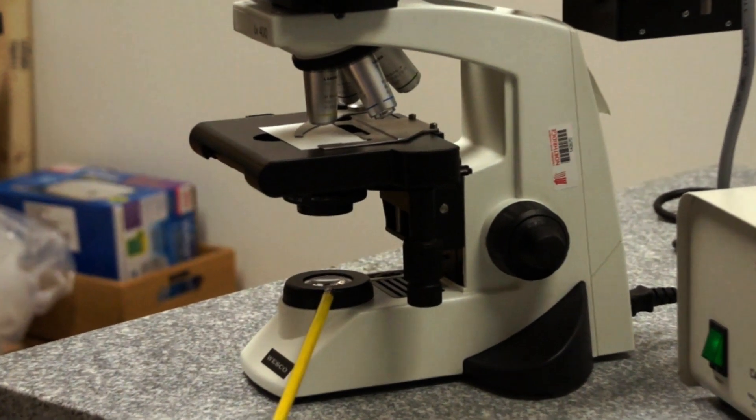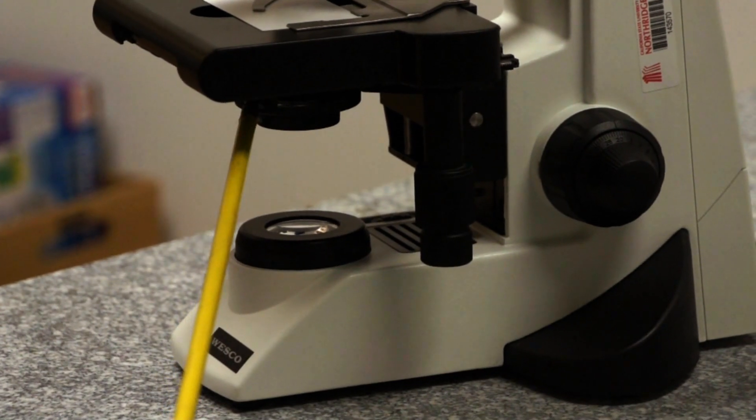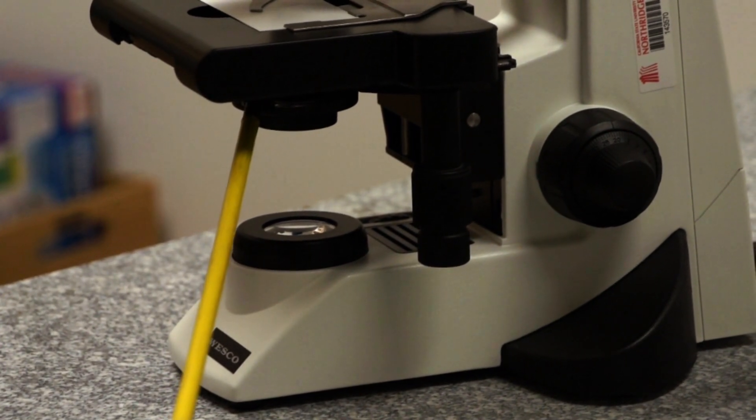The light travels through the field diaphragm and comes into the condenser. The condenser is an optical apparatus that does just as its name suggests. It condenses the light into a fine cone of light so that it can travel through the specimen on the stage, and then into the objective.